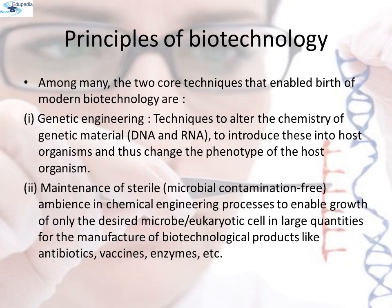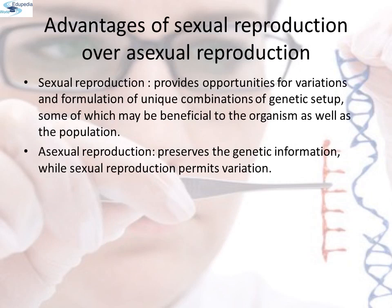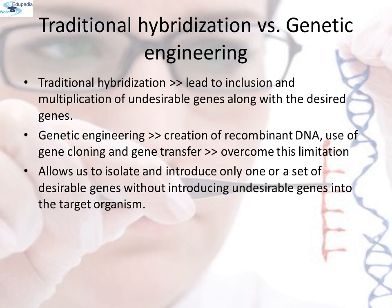Before going into details, we will discuss some important aspects to help understand the chapter. Advantages of sexual reproduction over asexual reproduction: sexual reproduction provides opportunities for variations and formulations of unique combinations of genetic setup, some of which may be beneficial to the organism as well as the population. Asexual reproduction preserves the genetic information, while sexual reproduction permits variations. Traditional hybridization procedures used in plants and animal breeding very often lead to inclusion and multiplication of undesirable genes along with the desired genes.